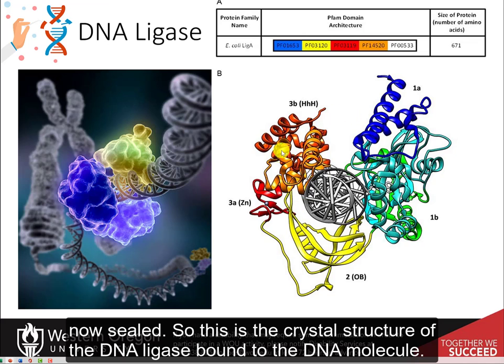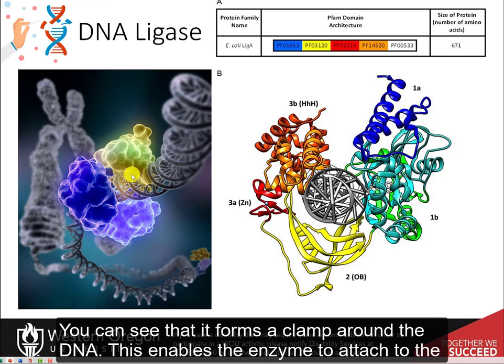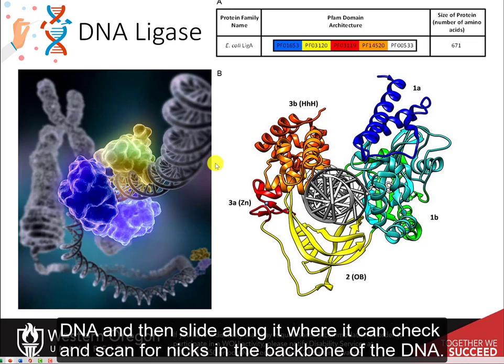This is the crystal structure of the DNA ligase bound to the DNA molecule. You can see that it forms a clamp around the DNA. This enables the enzyme to attach to the DNA and then slide along it, where it can check and scan for nicks in the backbone of the DNA.